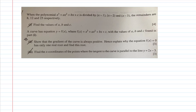Part 1 is a very classic A-level question that usually comes up and is very simple to do — it just uses your graphic calculator. The question states: when the polynomial x³ + ax² + bx + c is divided by (x−1), (x−2), and (x−3), the remainders are 8, 12, and 25 respectively.